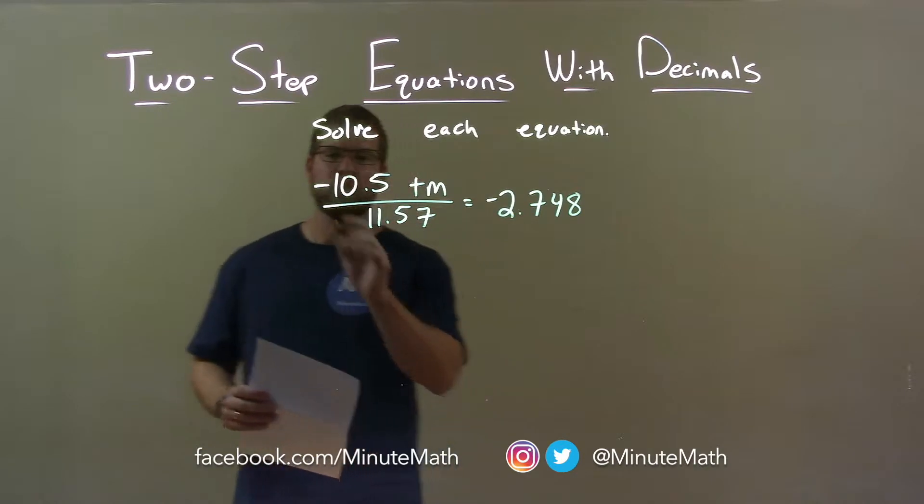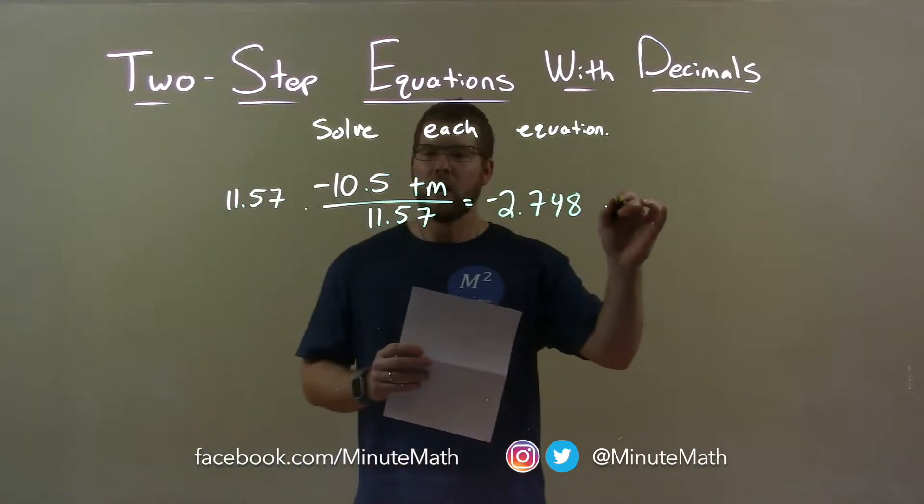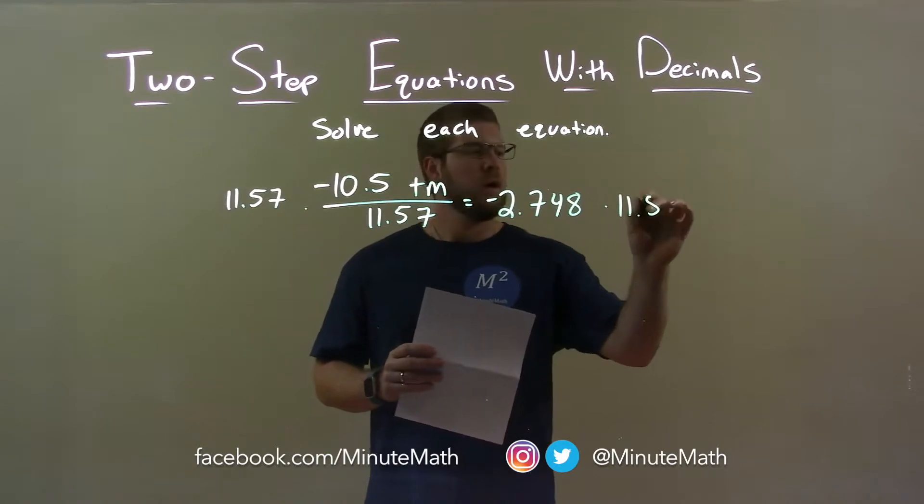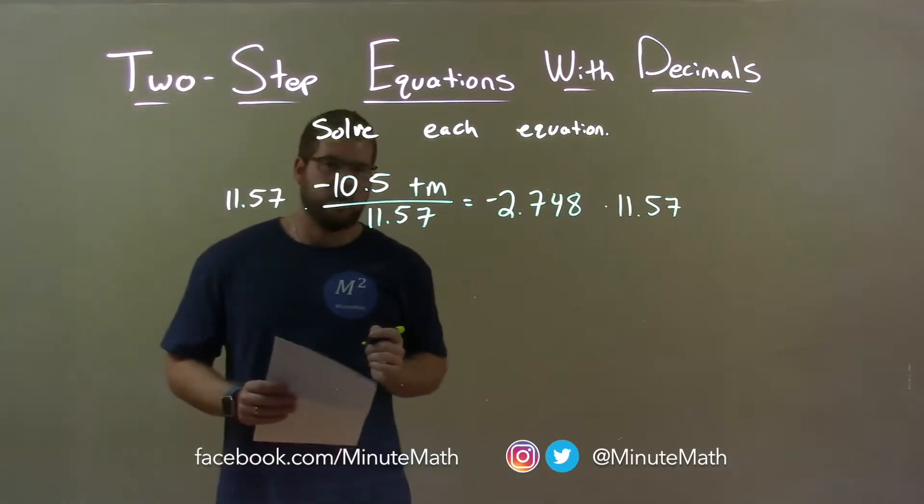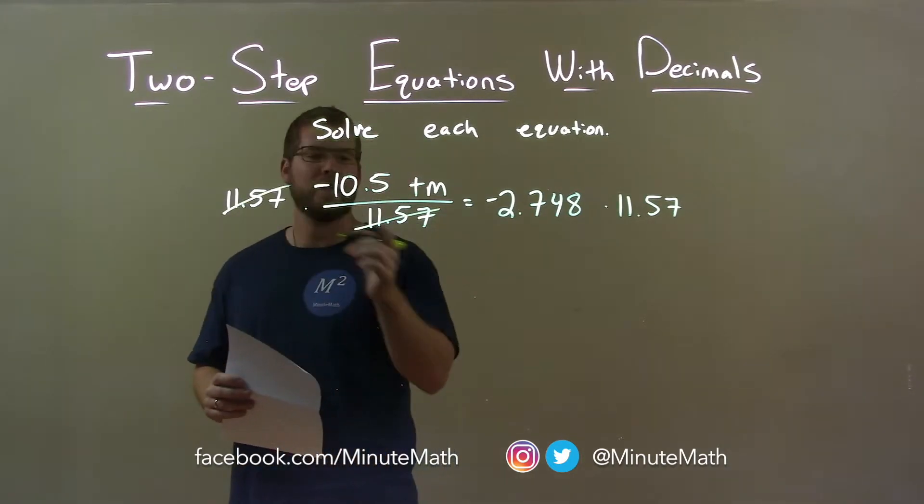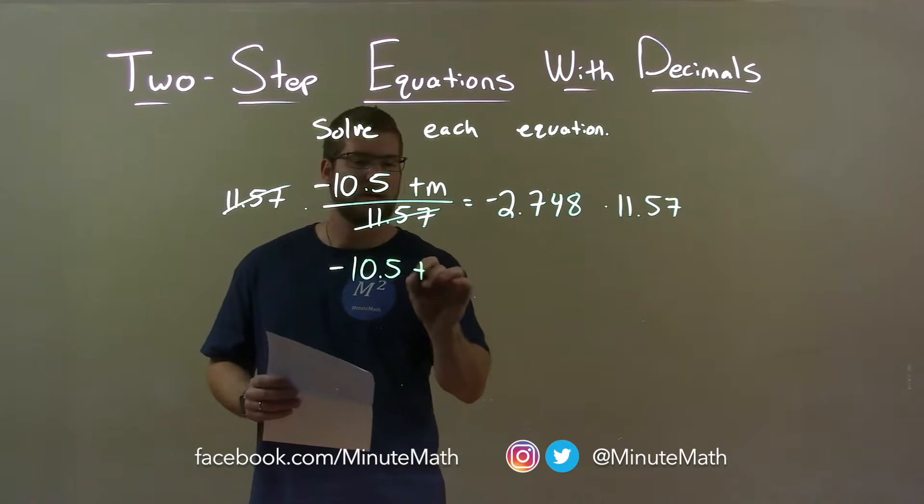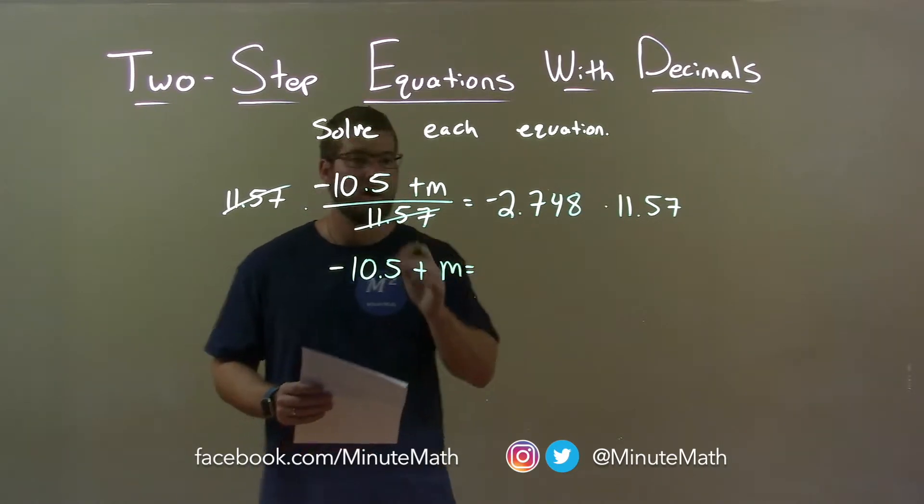First thing I want to do is multiply both sides by 11.57. Why do I want to do that? Since we're dividing by 11.57, if I multiply both sides by 11.57, we eliminate that denominator, leaving me negative 10.5 plus m by itself on the left.